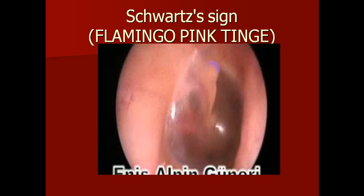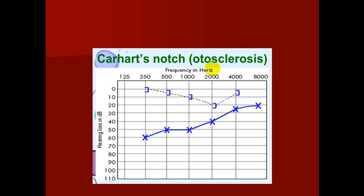Schwartze's sign is present in only 10% of cases; in 90% the tympanic membrane is normal. On pure tone audiometry of a patient with otosclerosis, there is conductive deafness with an air-bone gap. The bone conduction is better than the air conduction.